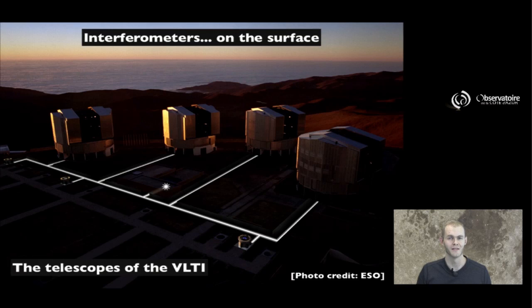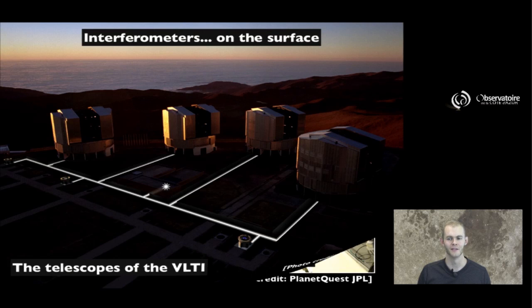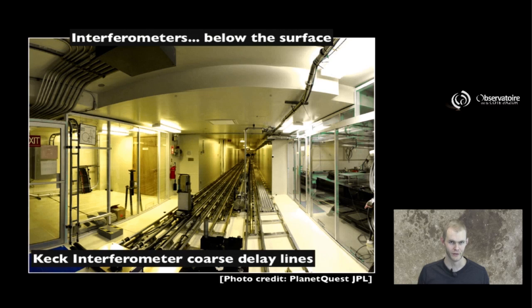If you look at pictures of interferometers, usually you only think of the telescopes that make up the interferometer, what's on the surface. Now, once the light is collected by these telescopes, what is hidden is the long tunnels that are used to maintain this equal path requirement here.